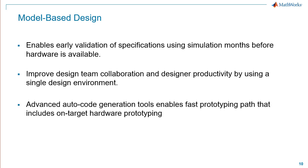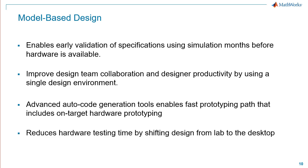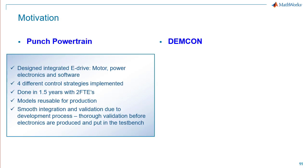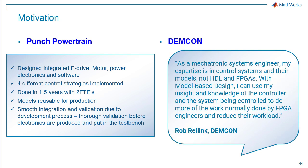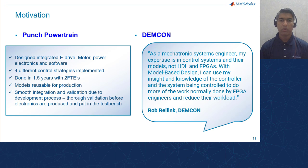When the design cycle reaches hardware prototyping, MathWorks' advanced autocode generation tools enables a fast prototyping path that includes on-target hardware prototyping. Using the model-based design workflow, engineers at Punch Powertrain were able to create an integrated E-Drive with four different control strategies, and they achieved this in 1.5 years with two full-time engineers. The quote from Rob Reiling from Demcon highlights that using this workflow, he was able to fully leverage his expertise in designing the controller and was able to accomplish the project without having to use FPGA engineers. I want to showcase how control engineers can use their expertise to design control system applications and implement their designs on FPGAs, having minimal FPGA programming experience.